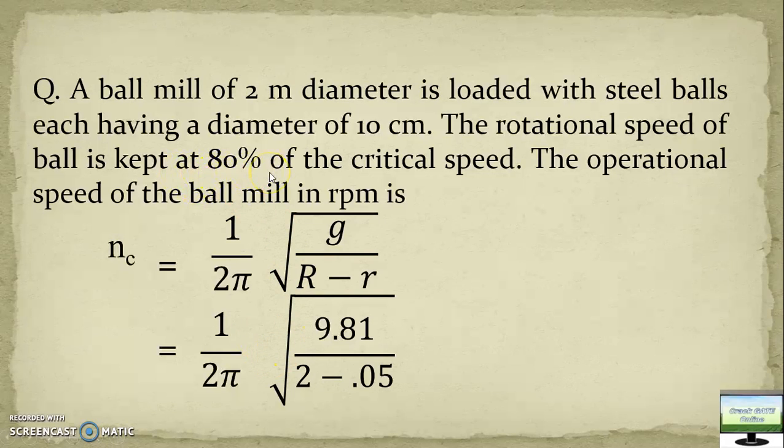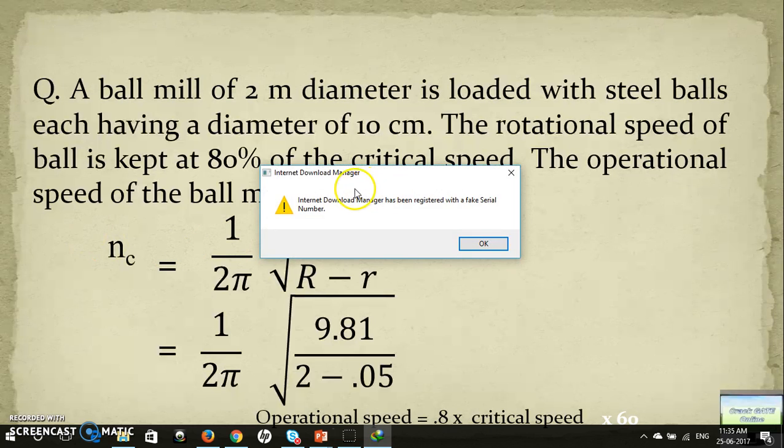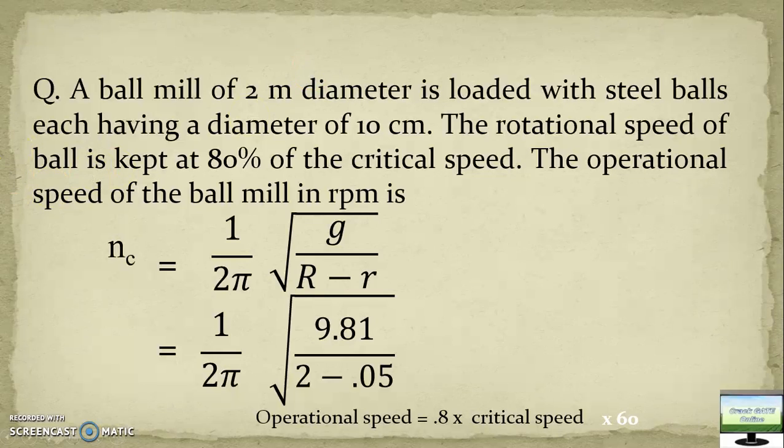Now if you calculate, they are saying operational speed is kept 80% of the critical speed. So what will be the operational speed? This nc into 0.8, and they are asking the speed in rpm. You need to multiply by 60 to convert into rpm.